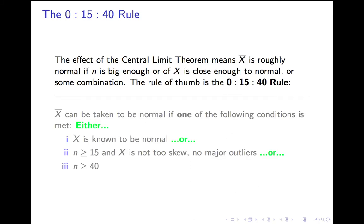The effect of the central limit theorem means you can count on x-bar being roughly normal if X itself is pretty close to normal, or if n is very large, or if X is somewhat normal and n is somewhat large. So there's a graded scale of how good you need each of those to be, which we will summarize in the rather complicated 0-15-40 rule, which covers all your bases.